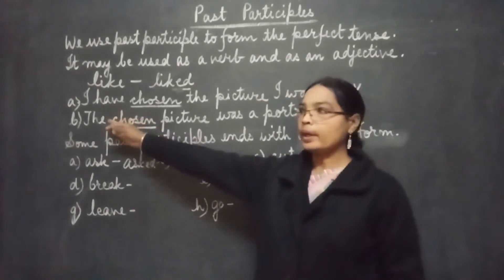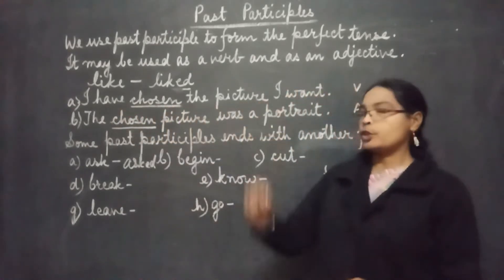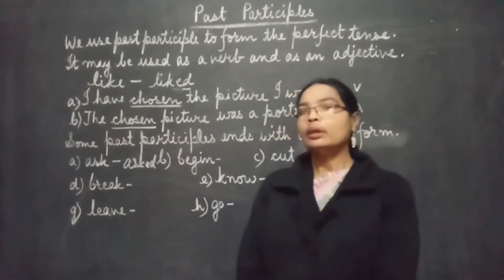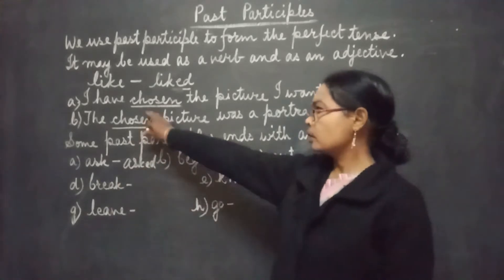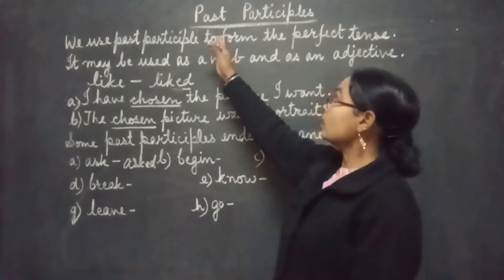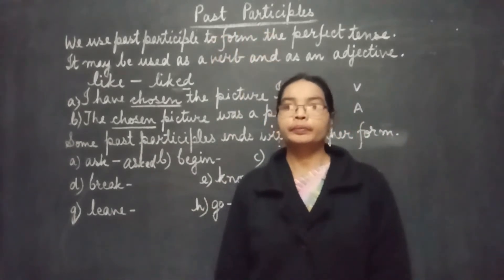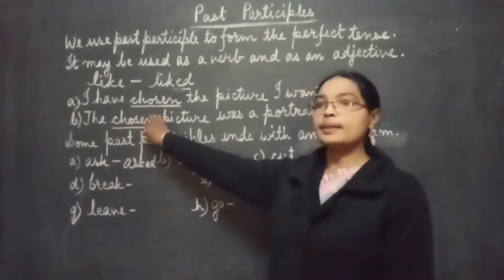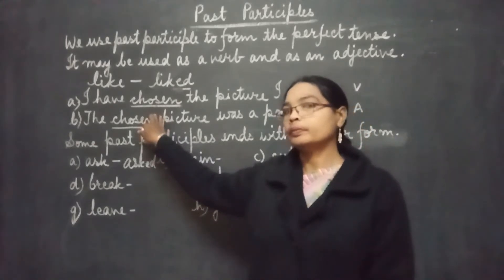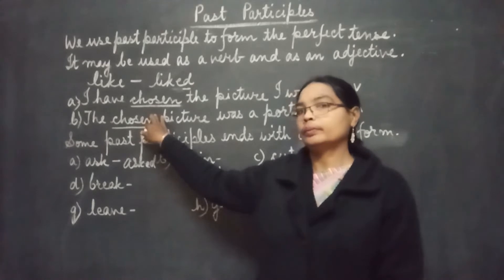Example number A: 'I have chosen the picture I want.' Here, our verb is 'chosen' and it belongs to our past participle. 'Chosen' is the third form of the verb 'choose'.